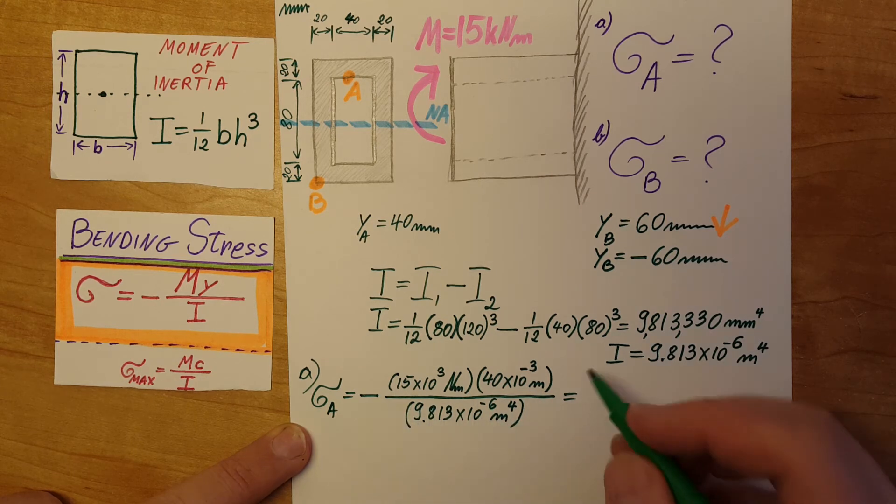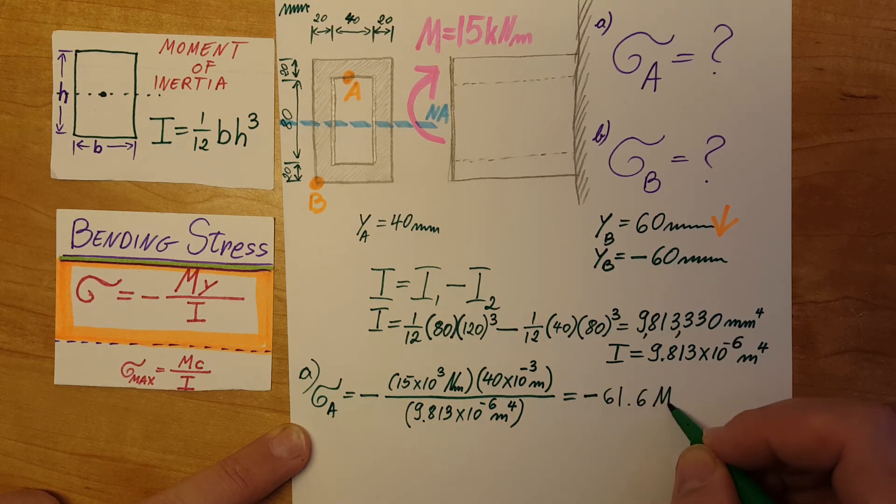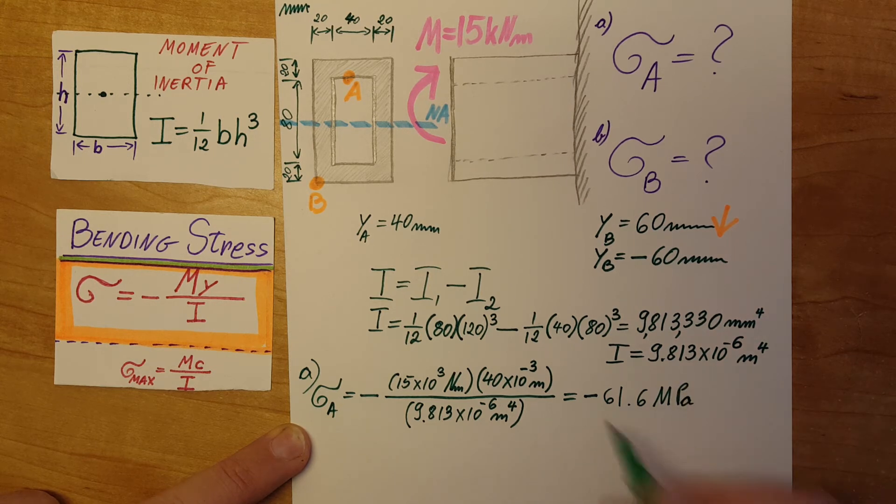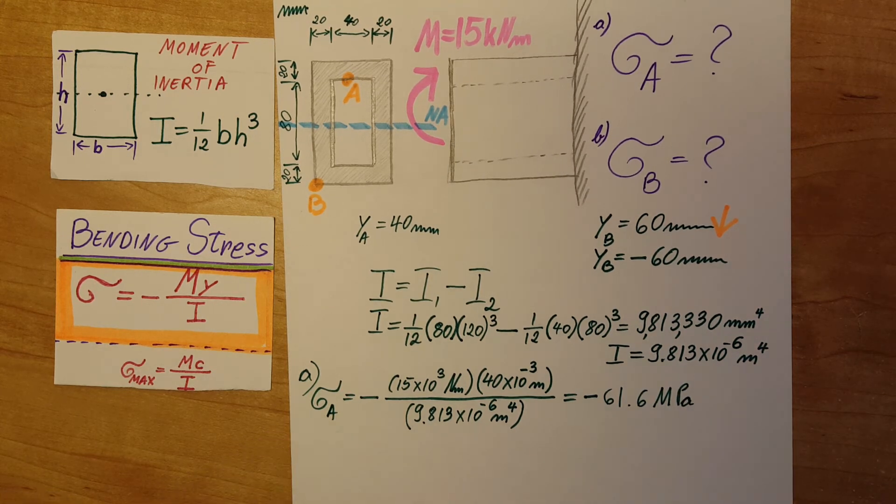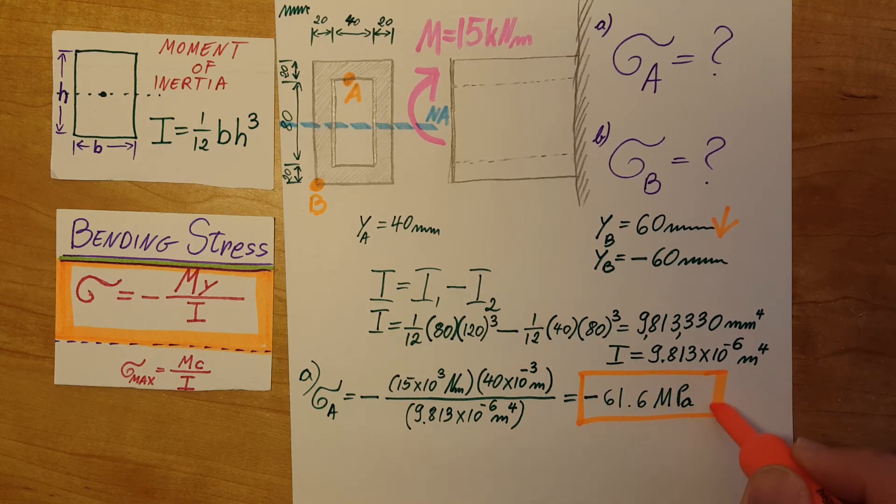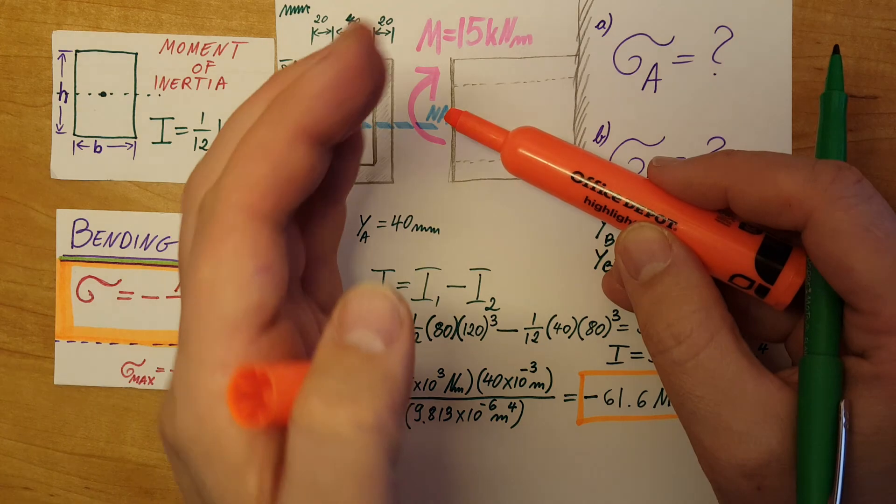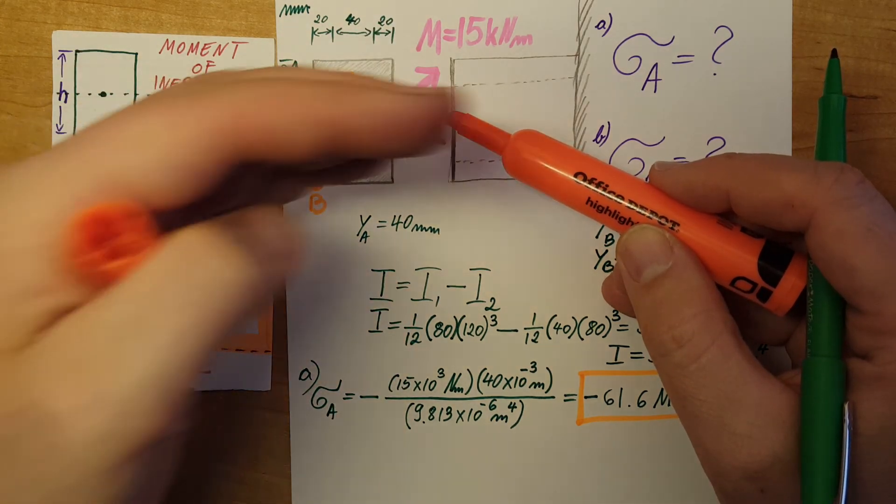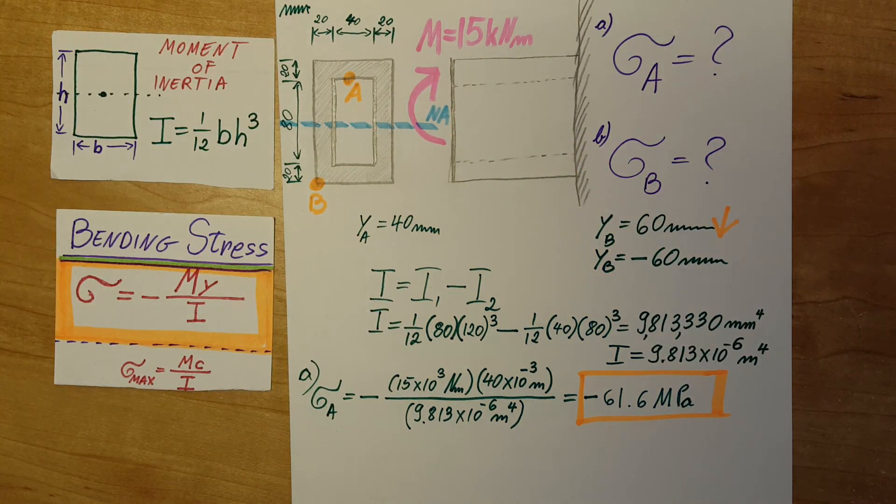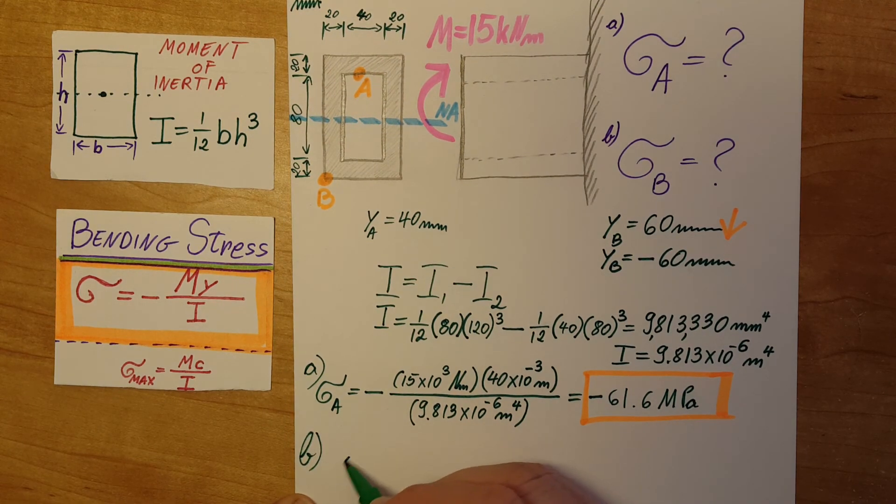And we will get a final value for the stress at A of negative 61.6 megapascals. And the negative will indicate that it is a compressive stress. As we can see, the moment is bending upwards, so therefore it's pushing the top of the rectangle.